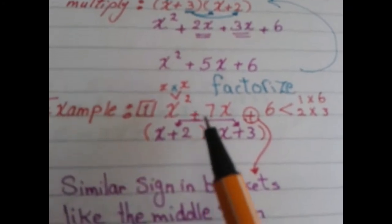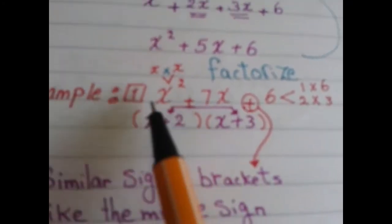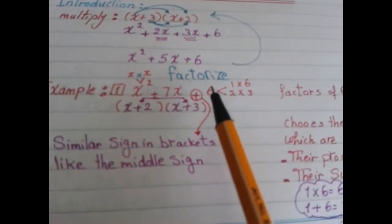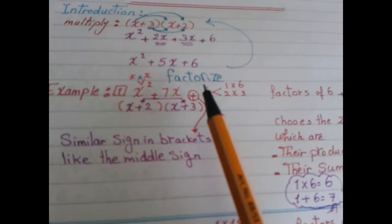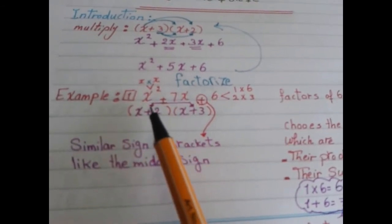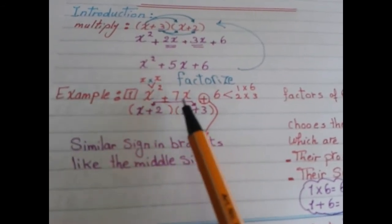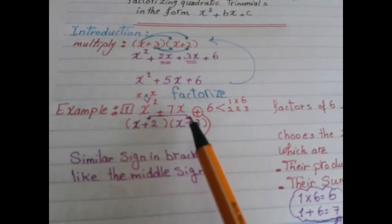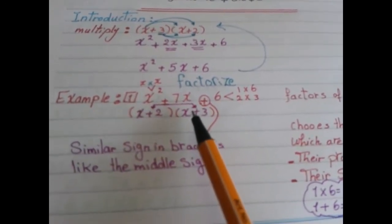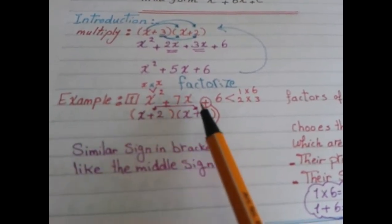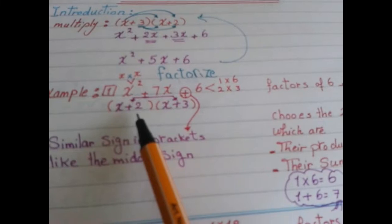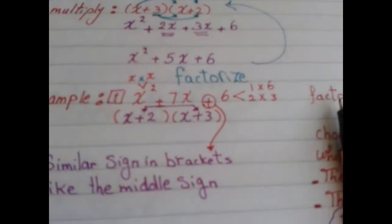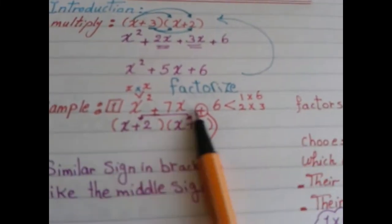Let's study the example. The question says: factorize x squared plus 7x plus 6. To factorize means to get the factors of this trinomial — that is, the two brackets which, when multiplied together, give back the trinomial.